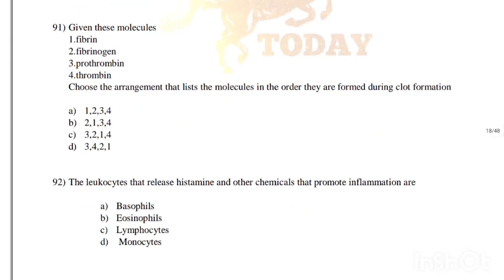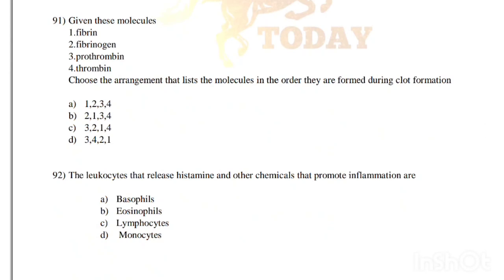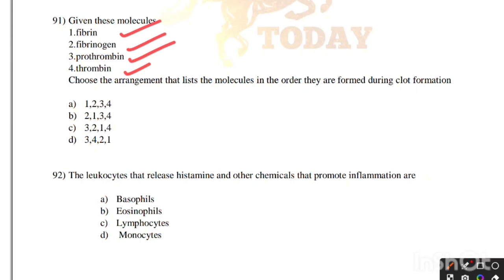Given these molecules, choose the arrangement that lists them in order as they are formed during clot formation: prothrombin, thrombin, fibrinogen, fibrin. Correct order is option D: 3, 4, 2, 1 — fibrinogen to fibrin via prothrombin and thrombin.